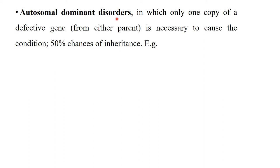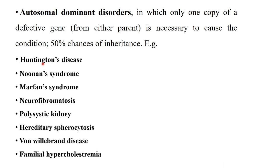Autosomal dominant disorders are disorders in which only one copy of a defective gene from either parent is necessary to cause the condition. This means a heterozygous condition can cause the disease. There are 50% chances of inheritance of an autosomal dominant disorder. Examples include Huntington's disease, Noonan syndrome, Marfan syndrome, neurofibromatosis, polycystic kidney disease, hereditary spherocytosis, Von Willebrand disease, and familial hypercholesterolemia.